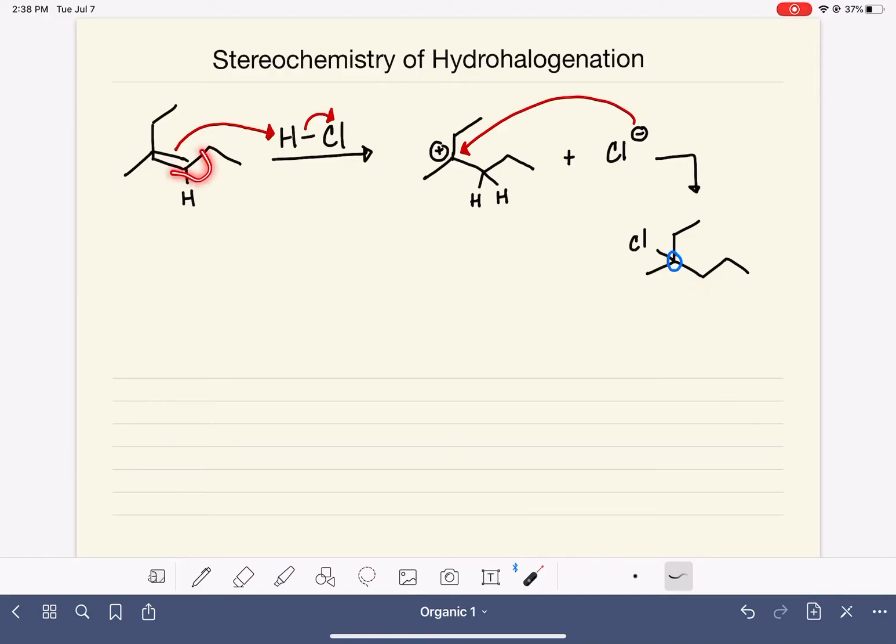We don't have any clues in the products to help us make that determination because the carbon originally was achiral. So to help us determine the chirality of this, we're going to rely on what we already know about a very similar reaction, SN1.